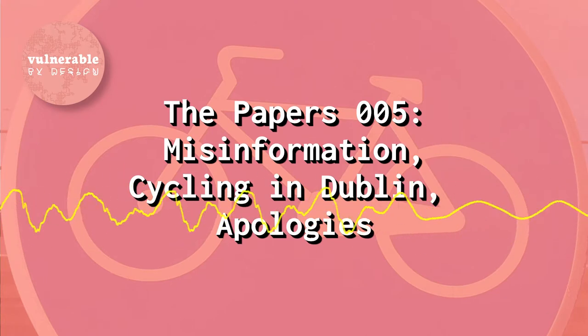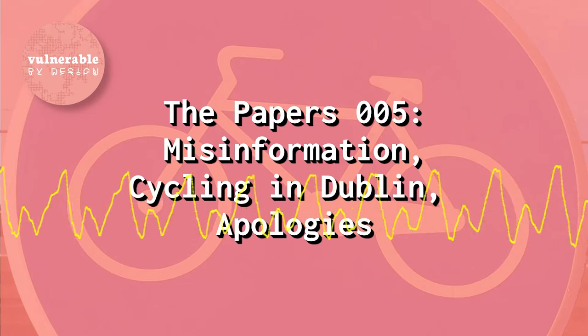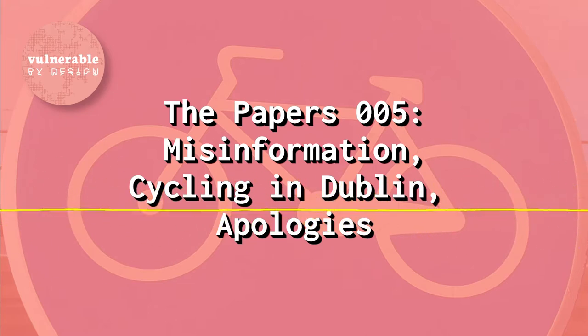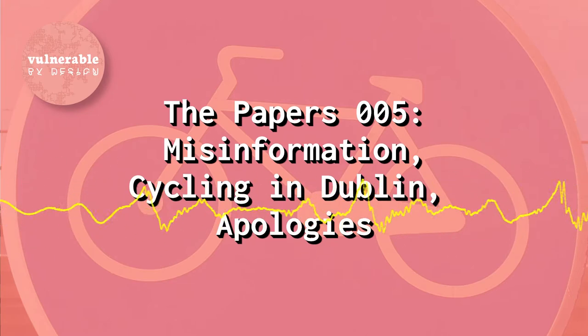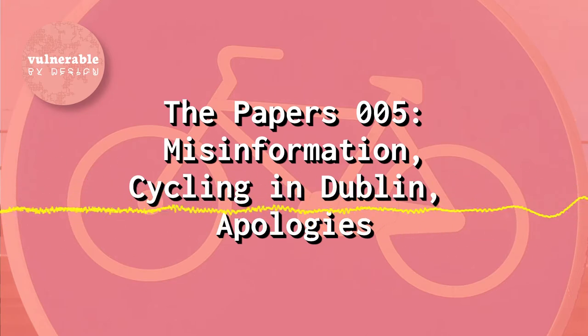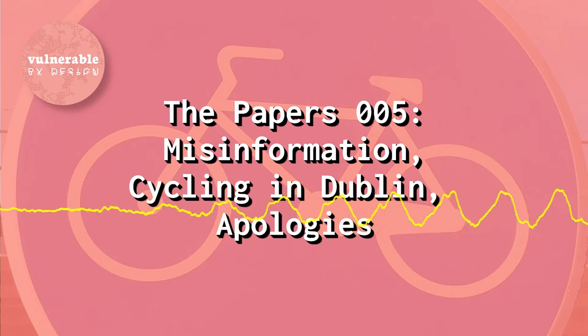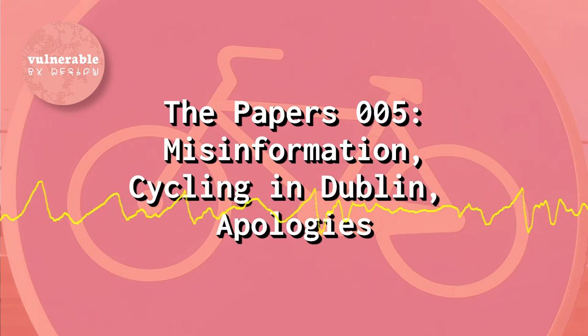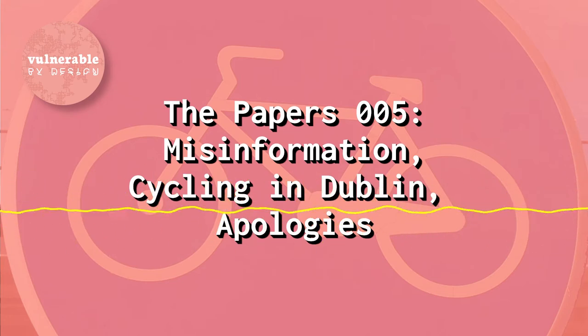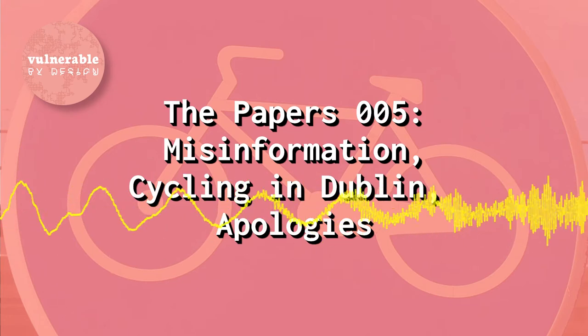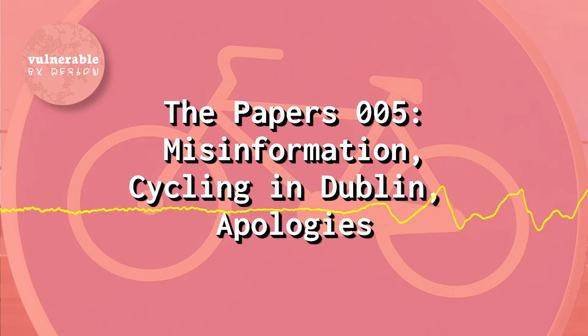This is our first paper. It's titled "Default to Truth in Information Behavior: a Proposed Framework for Understanding Vulnerability to Deceptive Information."